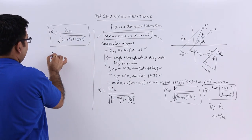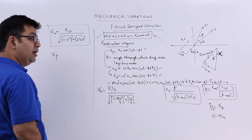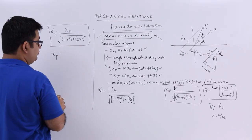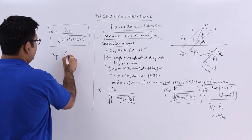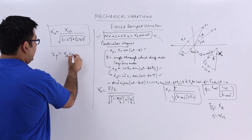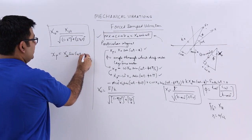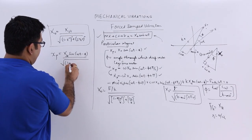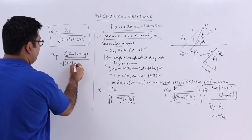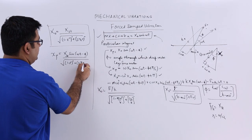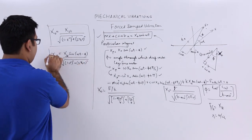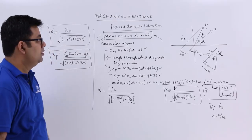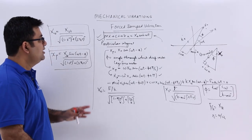So the particular integral solution becomes: xp = xst * sin(omega*t - phi) / sqrt[(1 - r^2)^2 + (2*zeta*r)^2]. This is the complete solution for this differential equation.